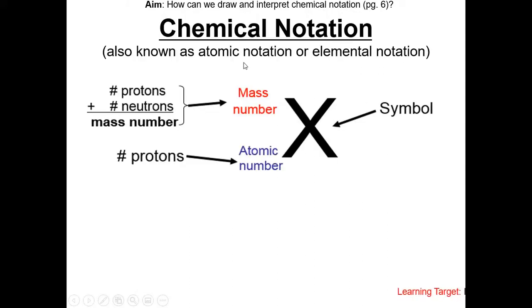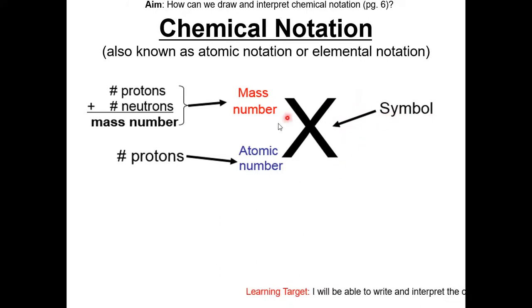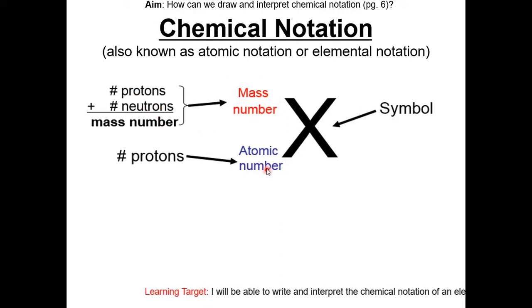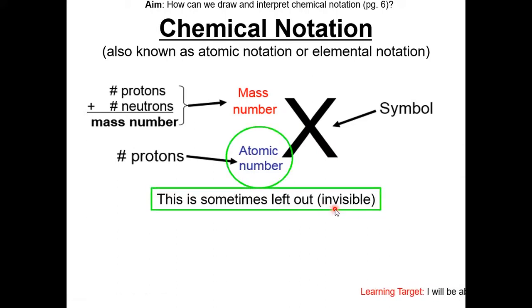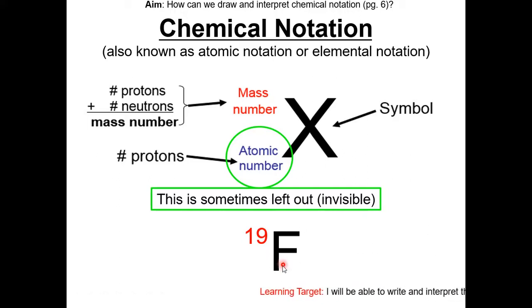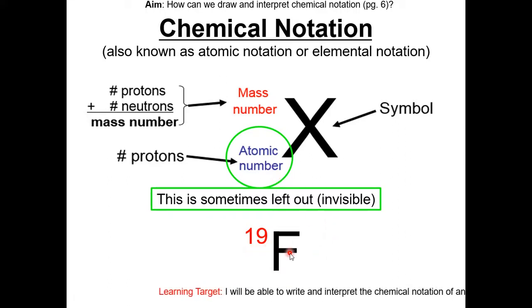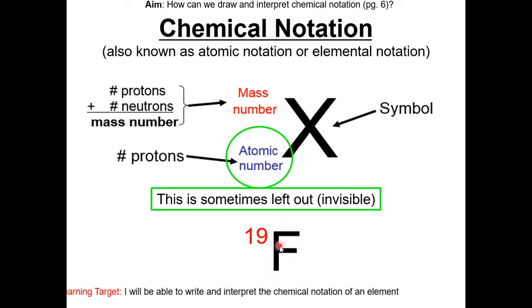Now let's put everything together. This is chemical notation, also known as atomic notation or elemental notation. X is your element symbol. On the top left is the mass number, which is protons plus neutrons. On the bottom left is your atomic number. Sometimes the atomic number might be left out, but you can still figure it out. For example, here we have fluorine with a mass number of 19 — only one element has the symbol F, which is fluorine, and all atoms of fluorine have the atomic number 9.